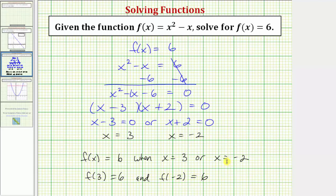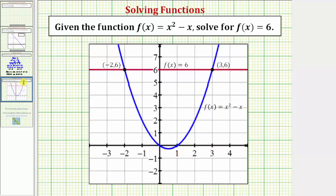Before we go, let's verify this graphically. We can graph f of x equals x squared minus x, which would be this blue parabola, as well as the constant function f of x equals six, which is this red horizontal line. Notice how the two points of intersection are the points negative two comma six and three comma six.